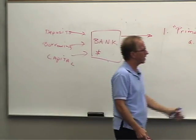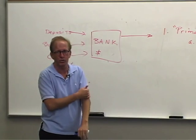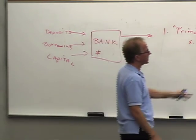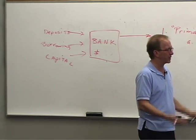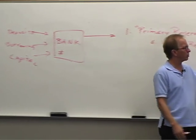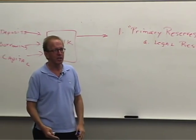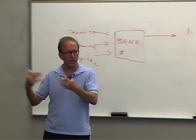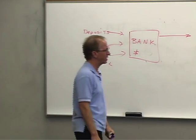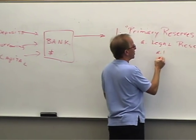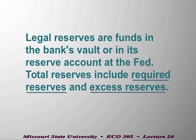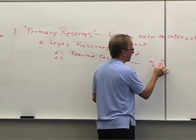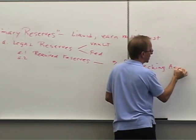The dollars in the vault are just cash — $10 bills, $20 bills, and so forth — including the cash drawers of tellers. Funds at the Federal Reserve in legally maintained reserve accounts are deposits there, and the bank treats that as cash. Within legal reserves, A1 is required reserves — a certain percent of checking account deposits.